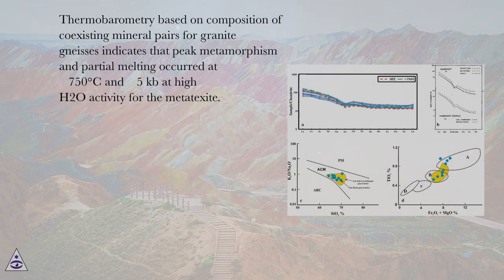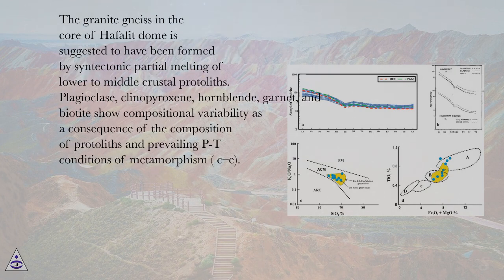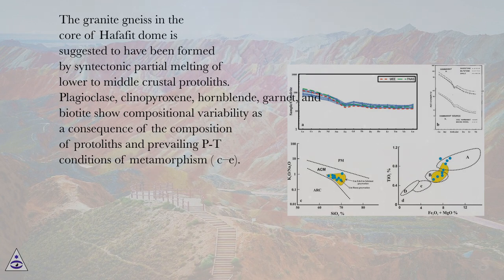Thermobarometry based on composition of coexisting mineral pairs for granite gneisses indicates that peak metamorphism and partial melting occurred at 750°C and 5 kilobars at high H₂O activity for the metatexite. The granite gneiss in the core of Hafafit dome is suggested to have been formed by syntectonic partial melting of lower to middle crustal protoliths. Plagioclase, clinopyroxene, hornblende, garnets, and biotite show compositional variability as a consequence of protolith composition and prevailing P-T conditions of metamorphism.